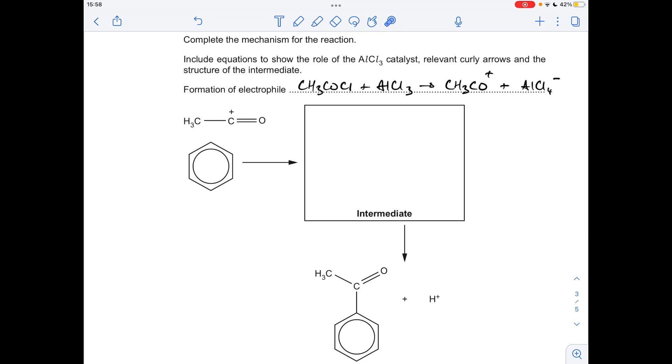So moving on to this unfamiliar mechanism, so we take the ethanol chloride and the catalyst and we generate the electrophile, I'm just representing it like this for the purpose of the mechanism, and an AlCl4 minus ion.